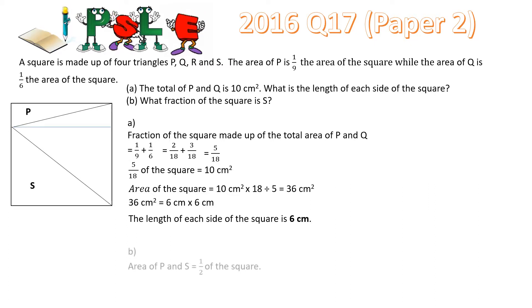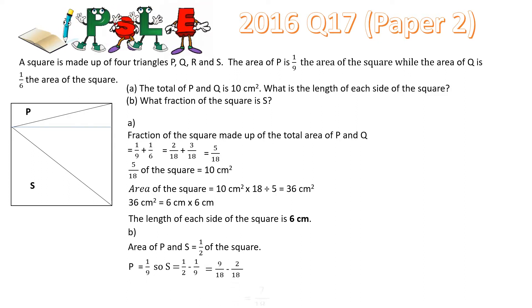As you could see, the total area of P and S occupy half of the area of the square. We know P equals 1/9. So for S, we can subtract 1/9 from half which gives us 7/18. S is 7/18 of the square.